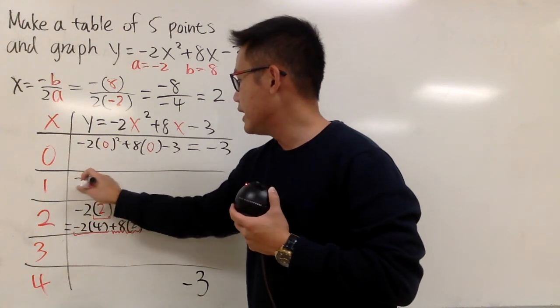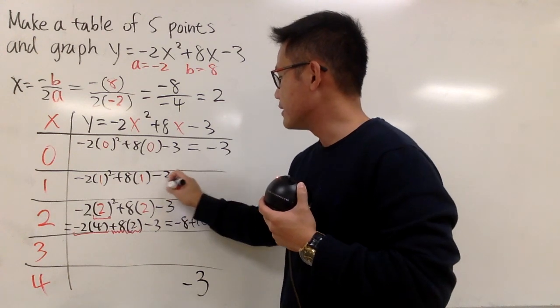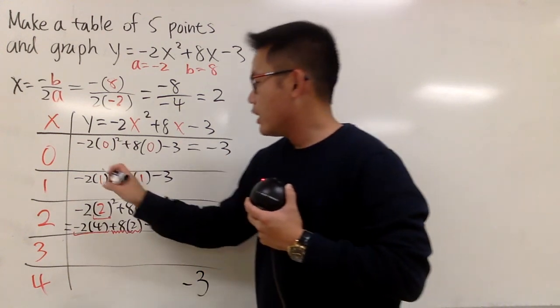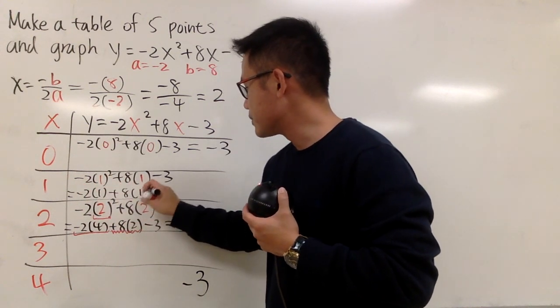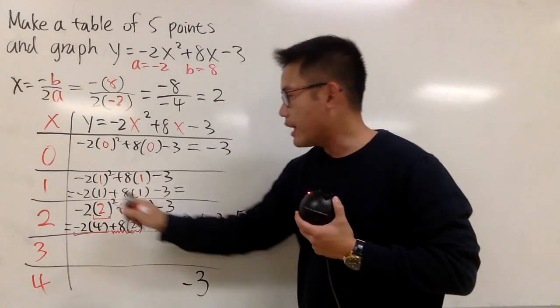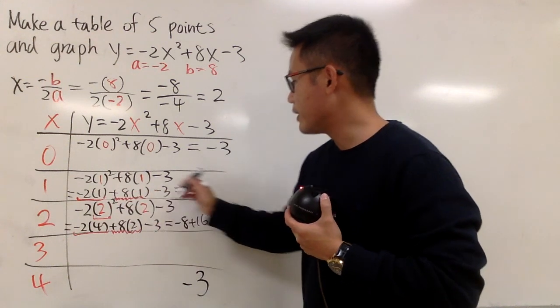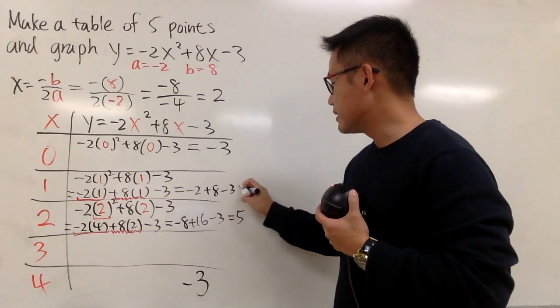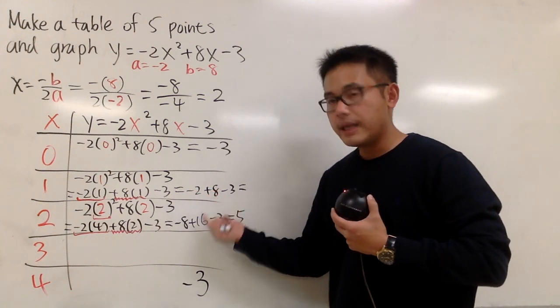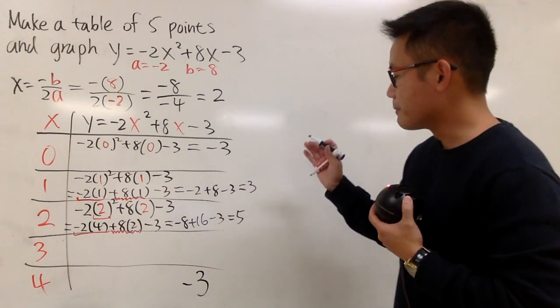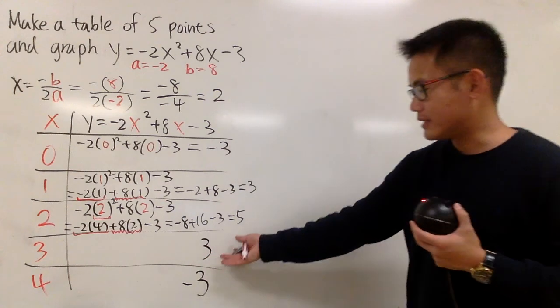Anyway, we plug in 1 here as well. Negative 2 times 1 squared plus 8 times 1, and then minus 3, like this. Right here, we will have 1 squared is just 1, so this is negative 2 times 1, plus 8 times 1, minus 3. Okay, negative 2 times 1 is negative 2, and then 8 times 1 is plus 8, and then minus 3, like this. Negative 2 plus 8 is 6, and then minus 3 is going to be positive 3. So this point right here is also going to have the same y value.